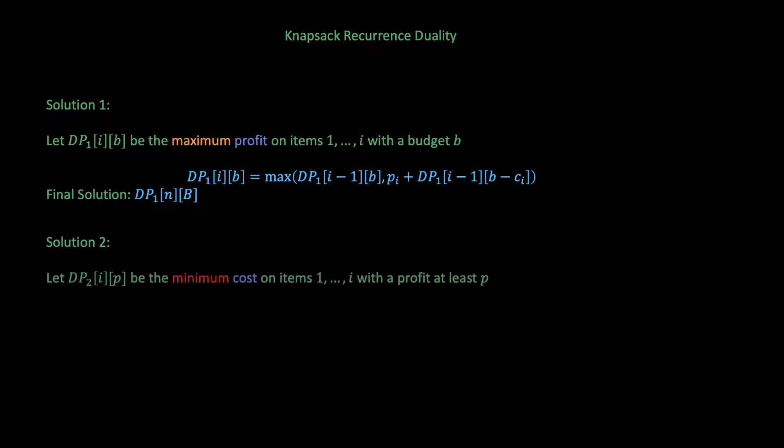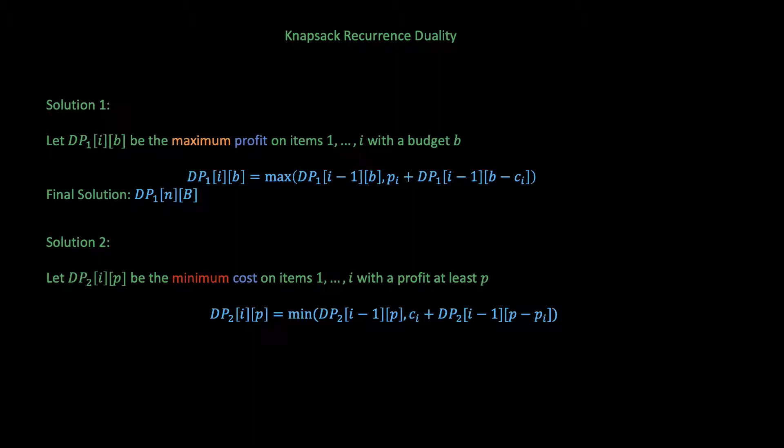Another solution we can get is to define DP2[I][P] as the minimum cost of the items 1 to I with profit at least P. In other words, we want some items from item 1 to item I such that their total profit is at least P and they have the minimum cost. Again, we have two options. Either leave the ith element, at which case we search the first I-1 elements for a subset with a profit of at least P, or we take item I and pay CI in cost, but only search the first I-1 elements for a profit of P minus the profit of I, or P-PI in this case. Here's the recurrence representing this.